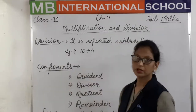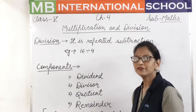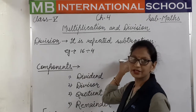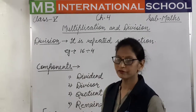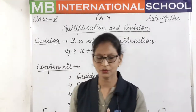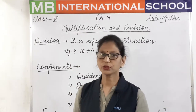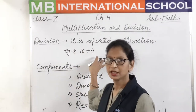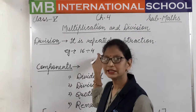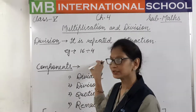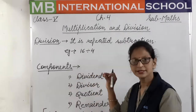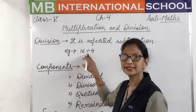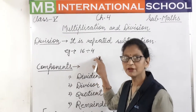Division is what? Division is repeated subtraction. In previous classes we have read that division is repeated subtraction. Let me give you an example. Suppose we have 16 divided by 4.